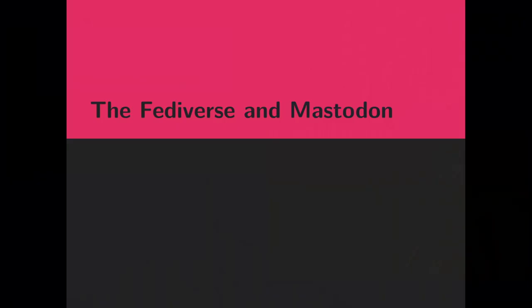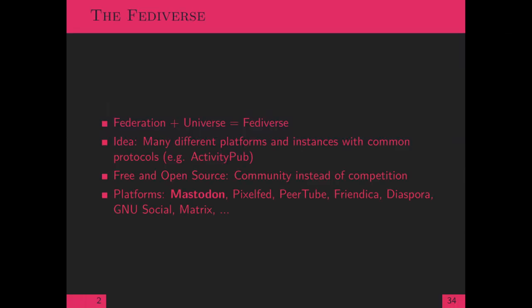So that we all know what we are talking about, I will shortly introduce the Fediverse and Mastodon to give a little bit of context. The Fediverse is a portmanteau of federation and universe. It's based on the idea of having many different platforms for many different purposes. Instead of having one centralized service for everything, we have smaller parts dedicated to just one purpose — like Unix philosophy, one program doing one thing well.